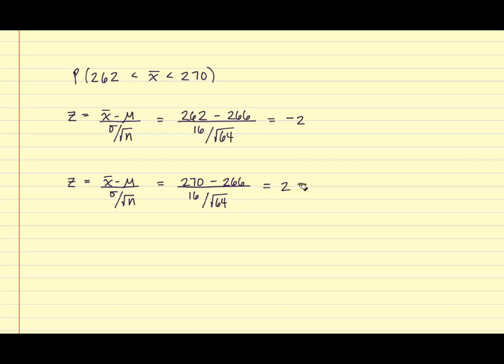We've now converted these values to finding the probability that z is between negative 2 and positive 2. Using this information, we're now going to use the normal table to find the probability.